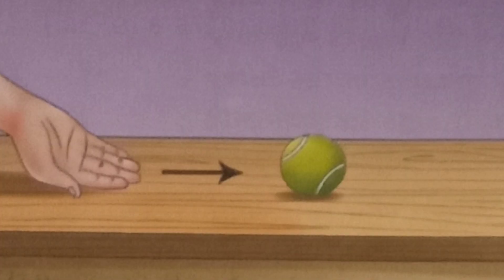Factors affecting friction: Let us understand with the help of an activity. Take a ball and roll it on the top of a wooden table. We find that the ball stops after traveling a short distance.